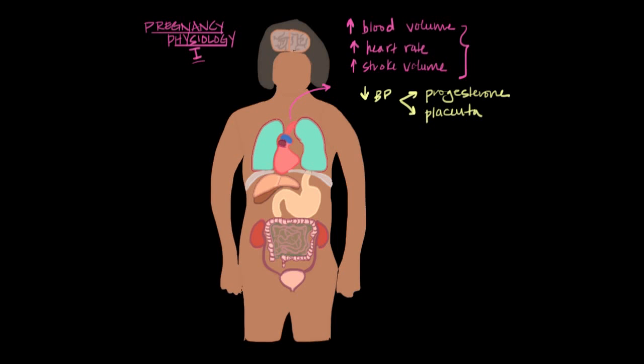I guess you can think of it kind of as a tall apartment building. And what would happen to the pressure in the shower heads if you added a whole additional floor of apartments with shower heads that are really leaky and let out a lot of water? The placenta is kind of like that. It's a really low resistance circuit.